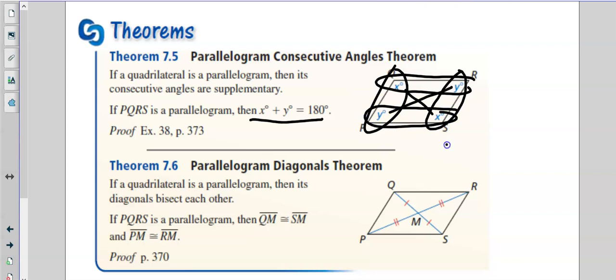Consecutive angles just means if you were walking around the track, what's the next one you would hit? Y. I walk this way, what's the next one I want to hit? X. I keep walking, what's the next one I want to hit? Y. And back to X again. So consecutive just means the next one. So they add up to 180.